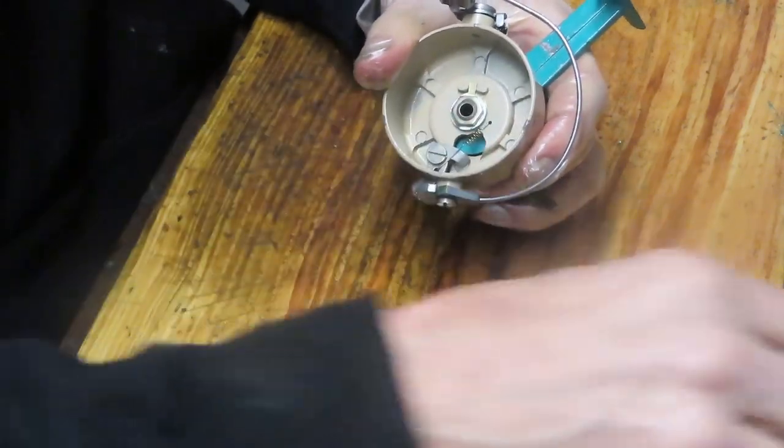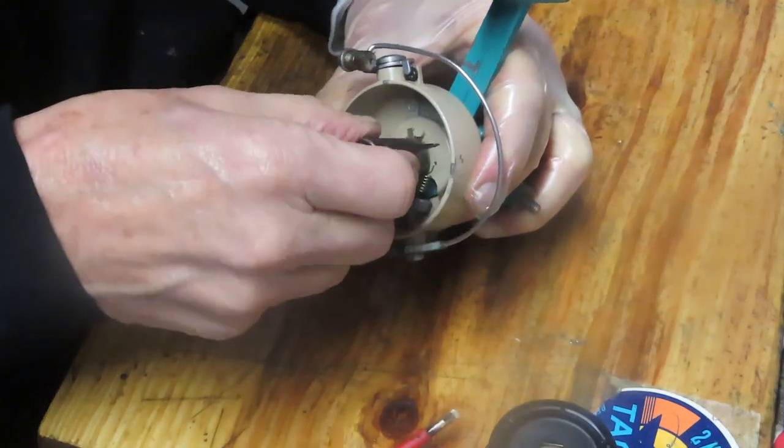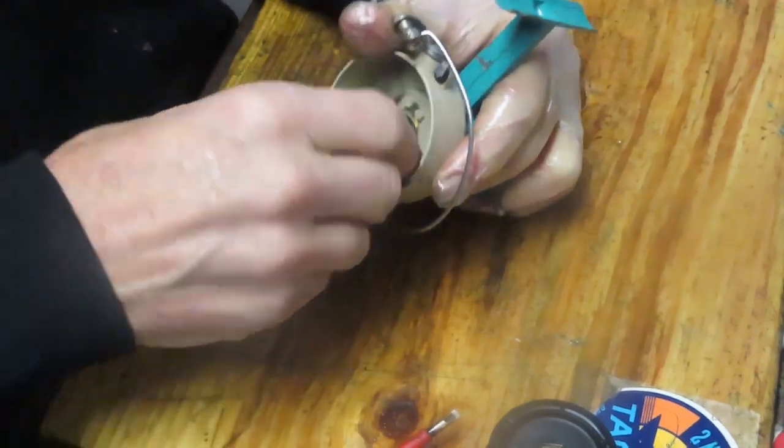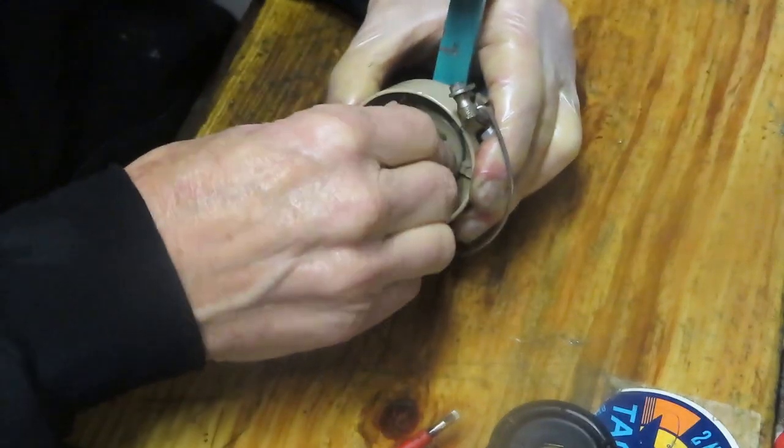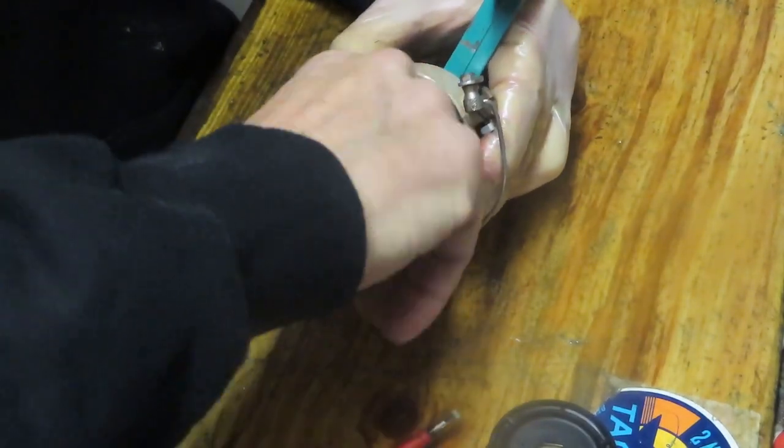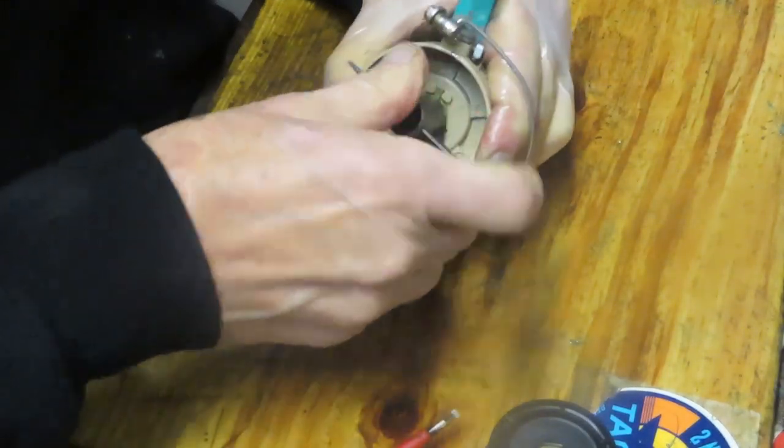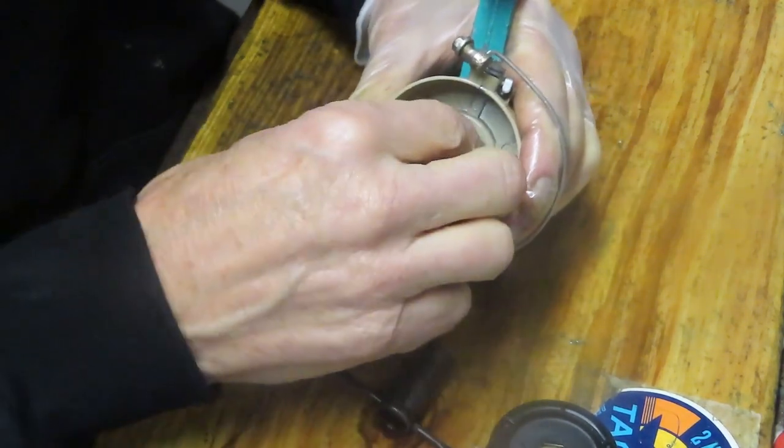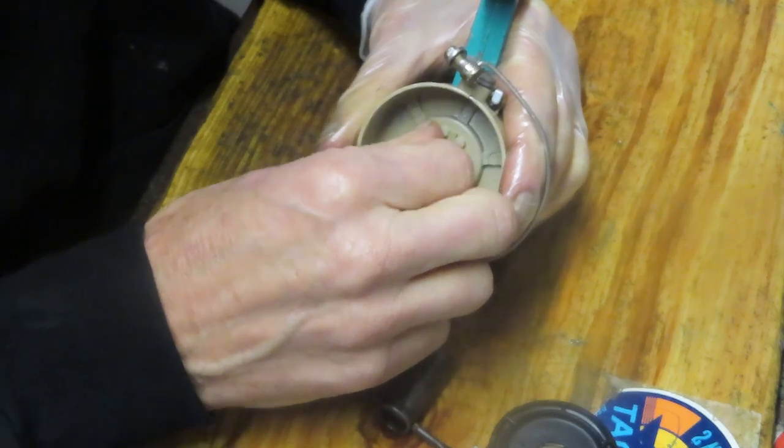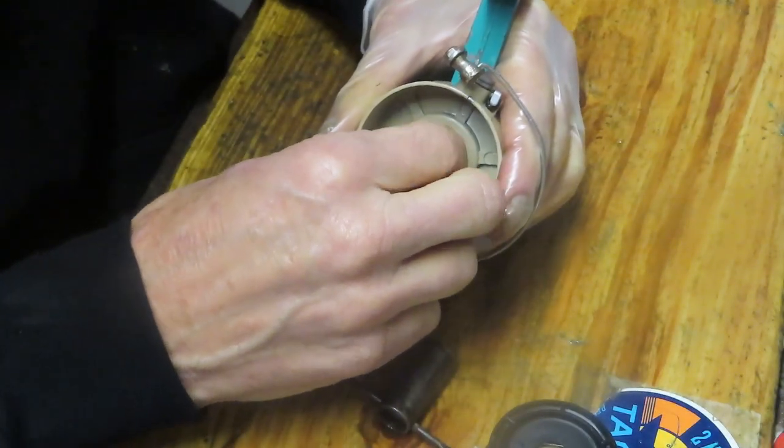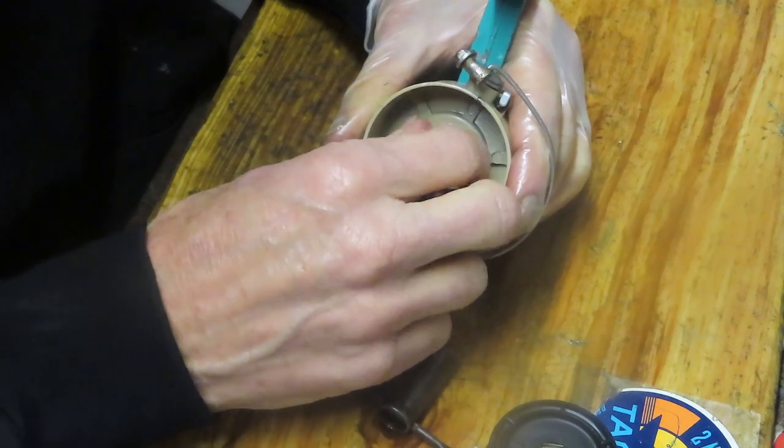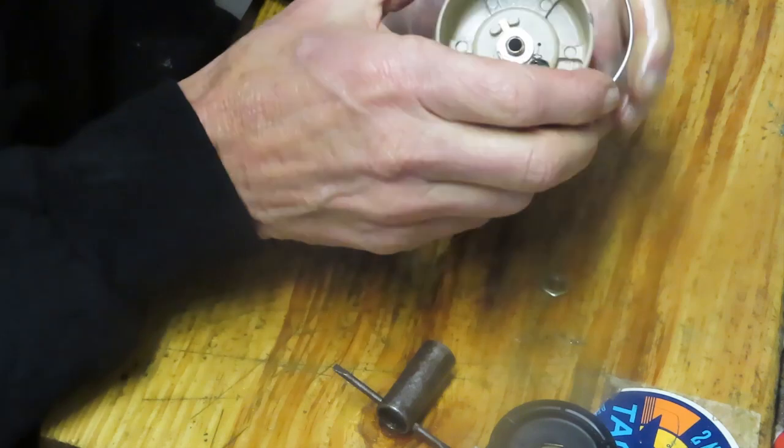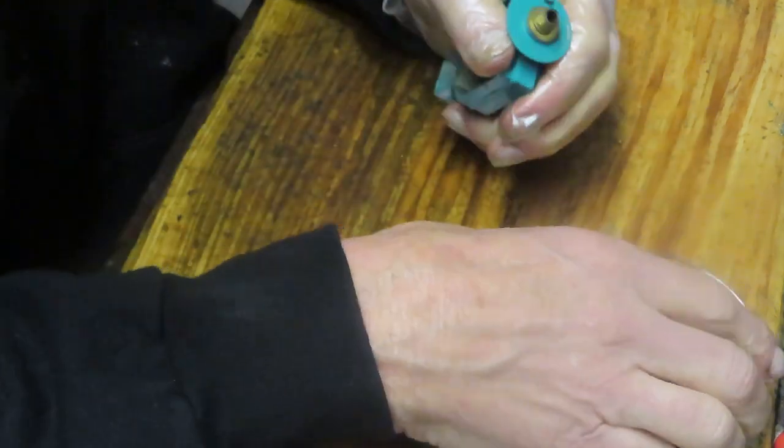I think we simply take the nut off now. It looks to be a 12 millimeter nut. It's reverse threaded, so it comes off in a clockwise rather than a counter clockwise. Right now, I'm being a little cautious. I really don't want to disturb the spring if I don't have to. So the nut is off. Now we should be able to lift up on the rotor.